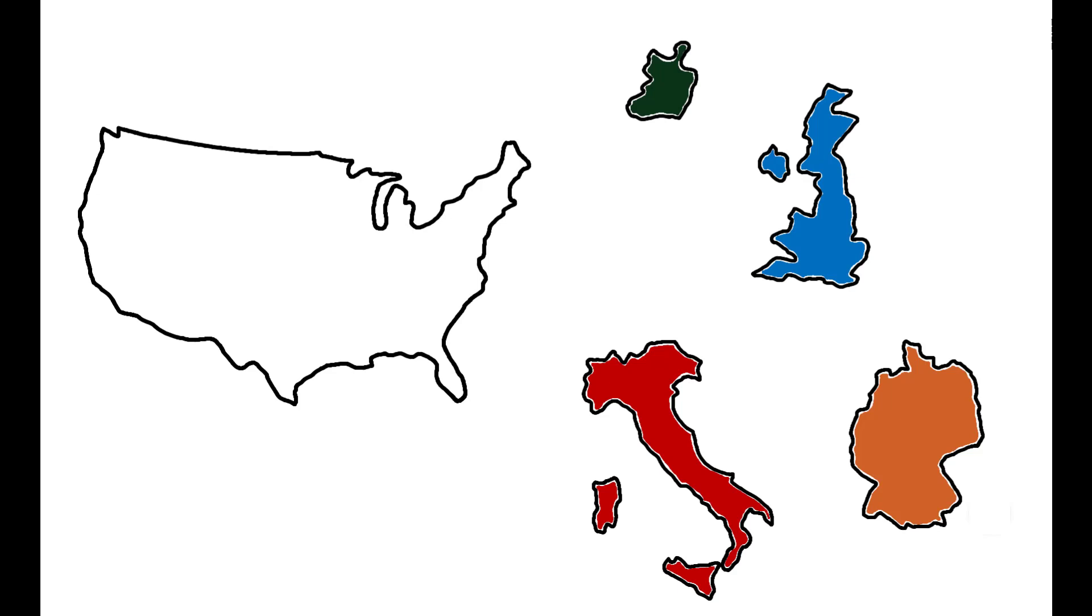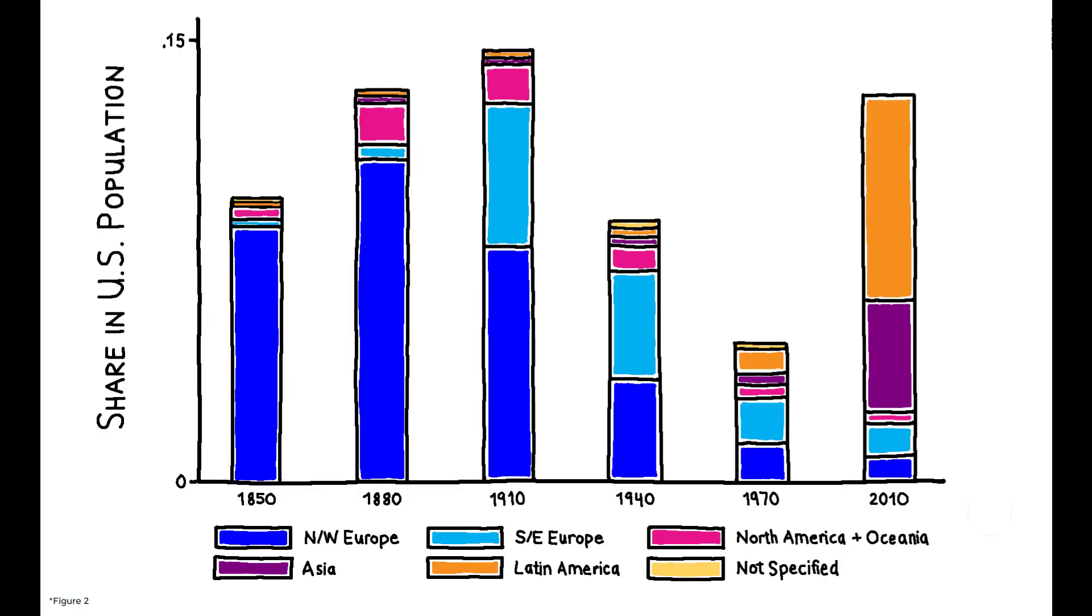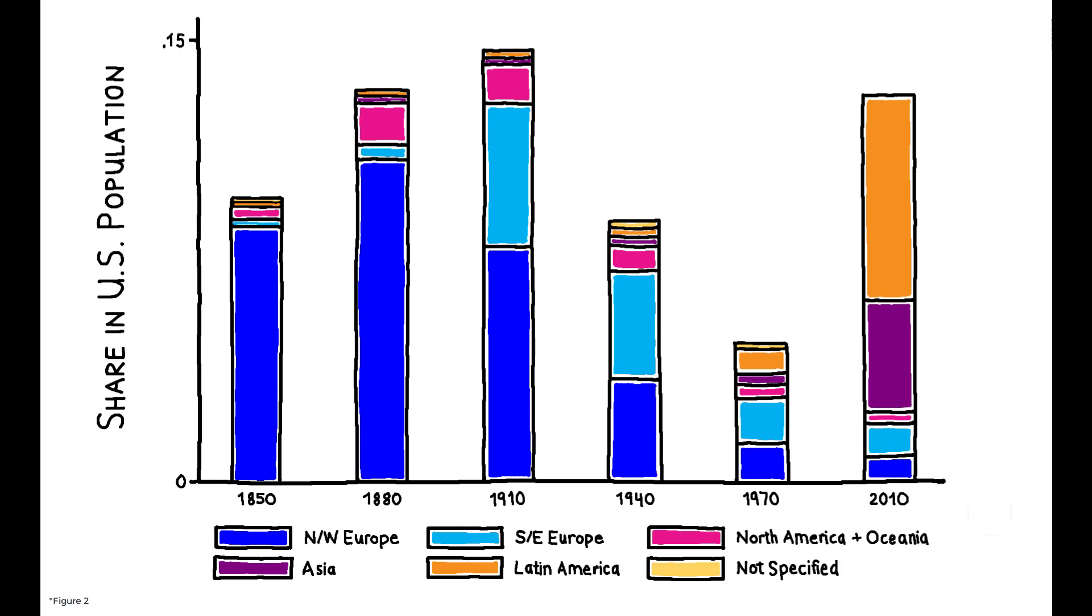To answer this question, the authors utilized the fact that quotas were assigned to countries of origin using a particular formula. In 1921, entry slots were set to be 3% of the foreign-born stock from each nationality living in the U.S. as of 1910.